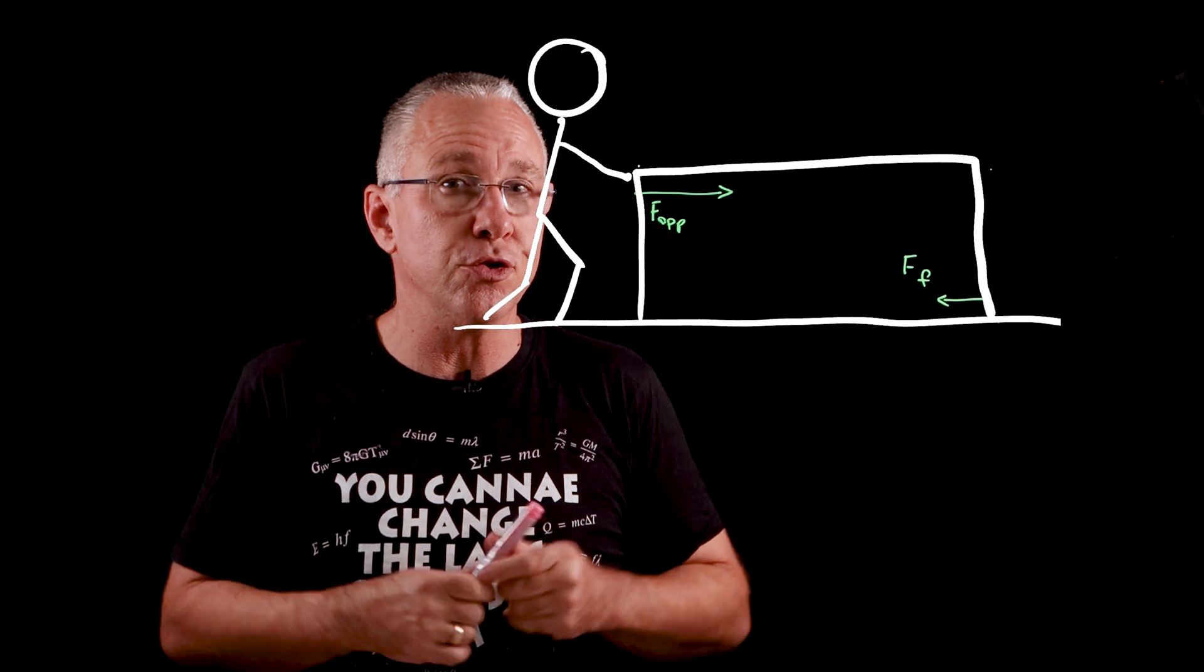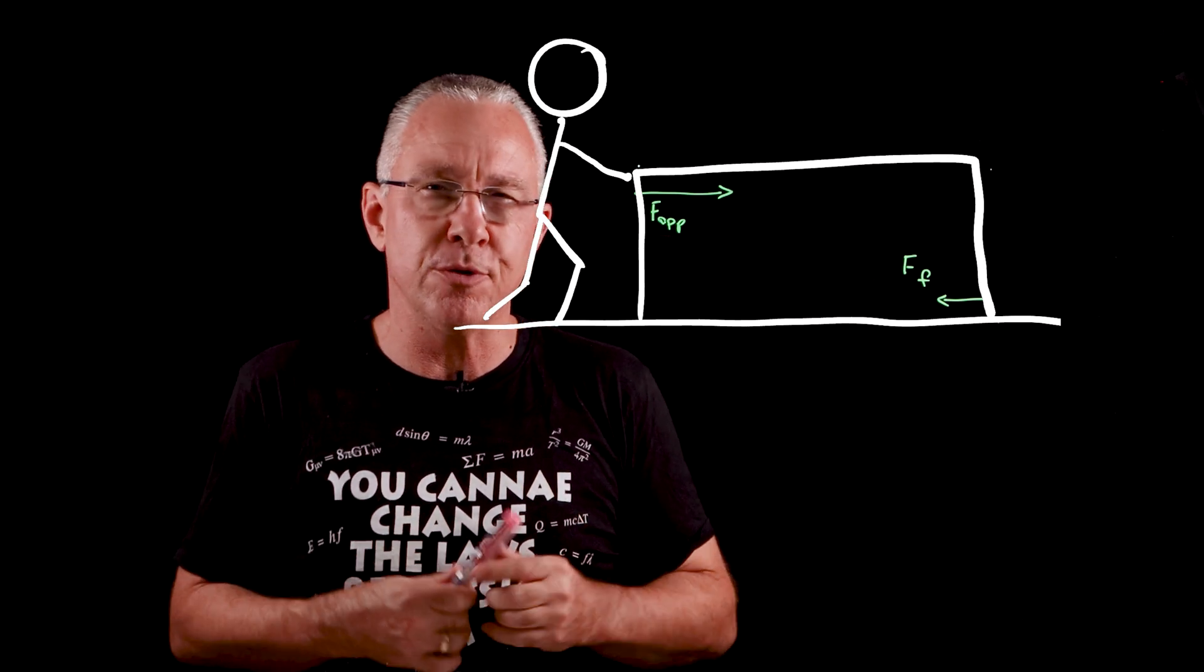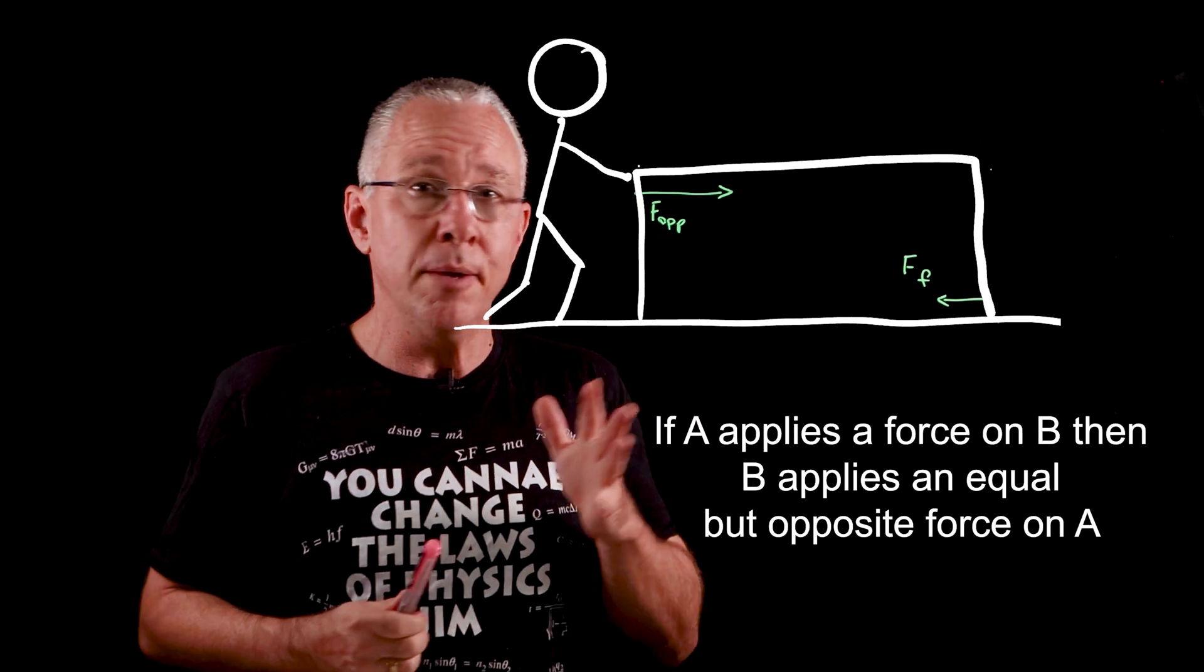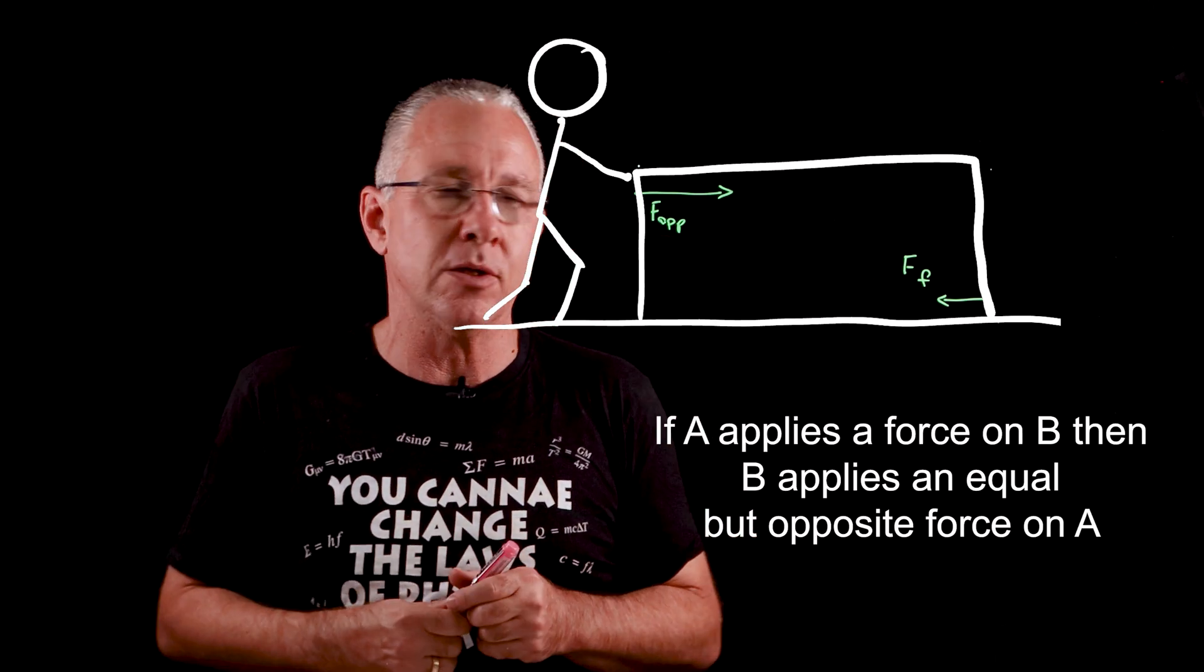Let's examine this from Newton's laws of motion and the first one we're going to look at is what's often referred to as Newton's third law, which basically says that if A applies a force on B then B applies an equal and opposite force back on A.